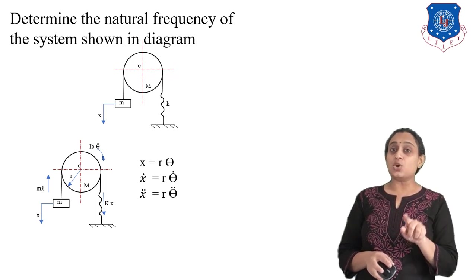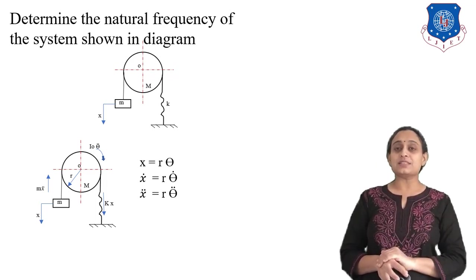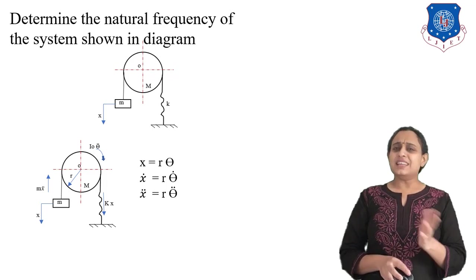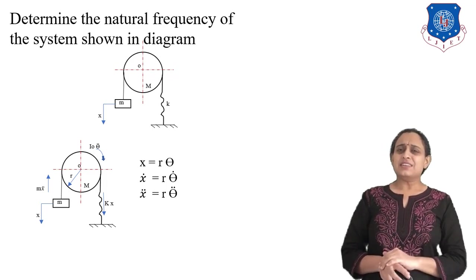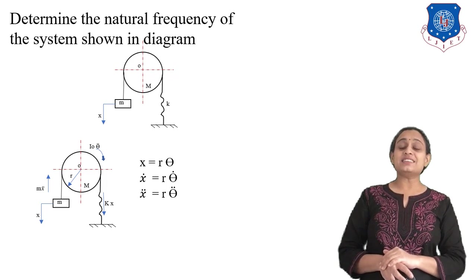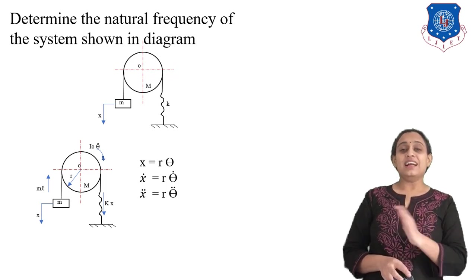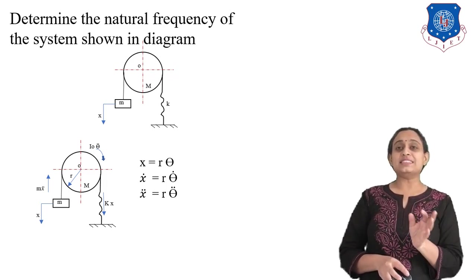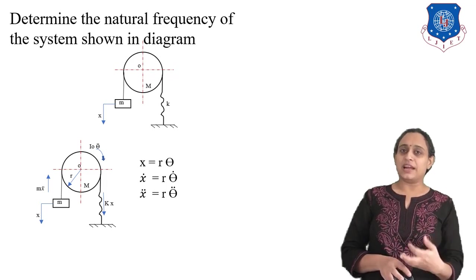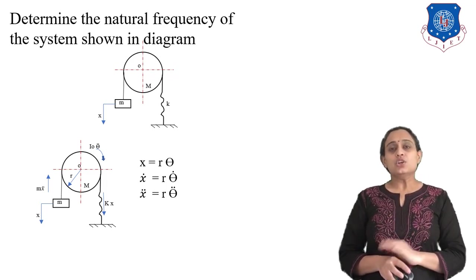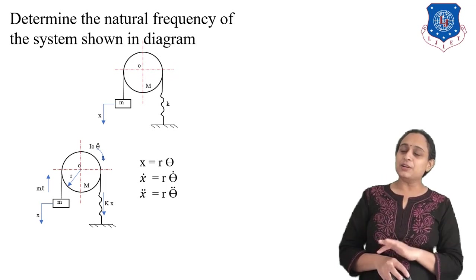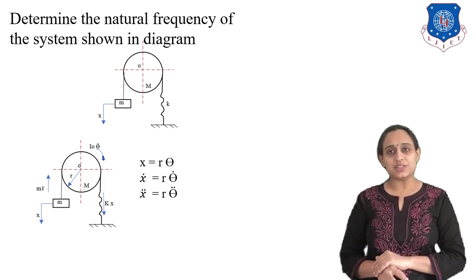Let X be the displacement of the mass. We write X = R·θ, so Ẋ = R·θ̇ and Ẍ = R·θ̈.